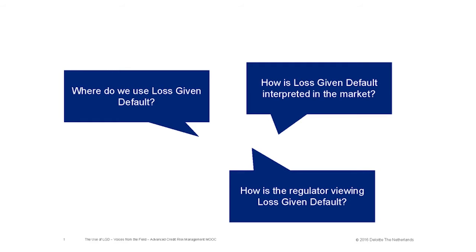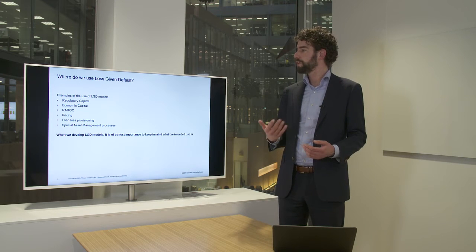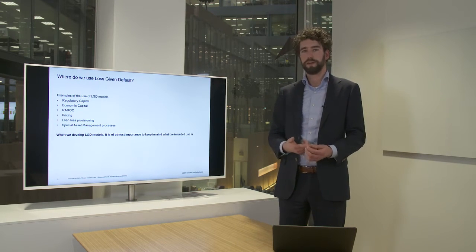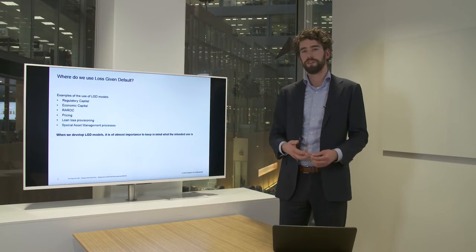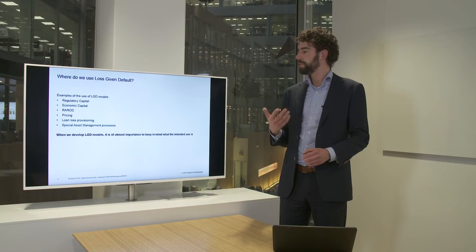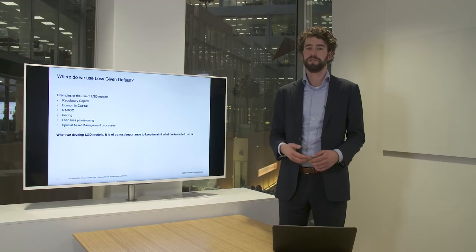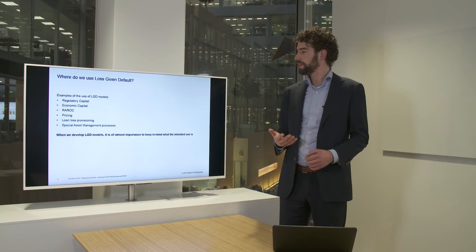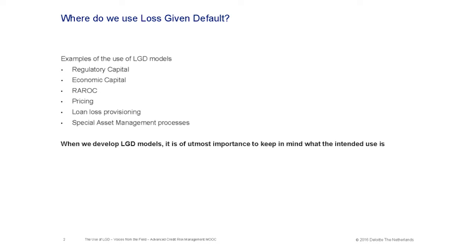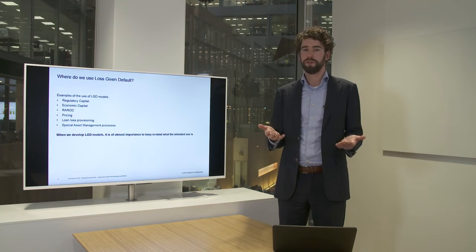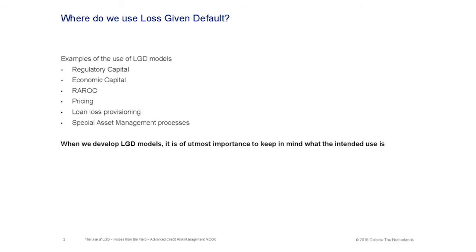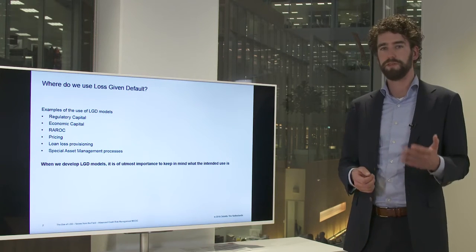Let's start with where do we use loss given default. In this MOOC we're concentrating more on the capital side, on IRB models, so we're looking at regulatory capital calculations. But economic capital is also an important use of LGD, which we use in risk-adjusted return on capital calculations. Another important part is pricing, and another part is provisioning — lots of provisioning is model-based where we use LGD estimates. Last but not least, we want to use LGD to distinguish our good and bad clients. PD is one of the drivers for that distinction, but loss given default is also a very important component. Special asset management processes also take into account LGD estimates. When we develop LGD models, it's of utmost importance to keep in mind what the intended use is.